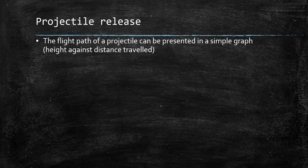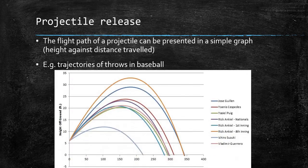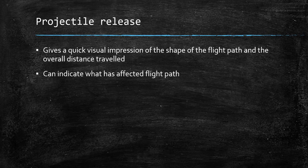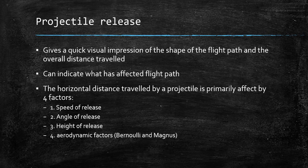The flight path of a projectile can be presented in a simple graph: height against distance travelled. This diagram shows trajectories — another word for flight path — of throws in baseball. Generally speaking, the lower the height it's thrown, the less distance it travels; the higher it's thrown, the further it tends to travel. There are four factors that will affect the distance travelled by a projectile: the speed of release, the angle of release, the height of release, and aerodynamic factors.